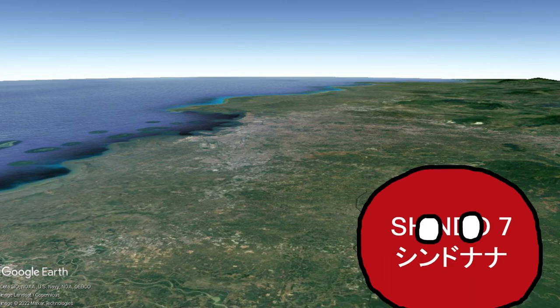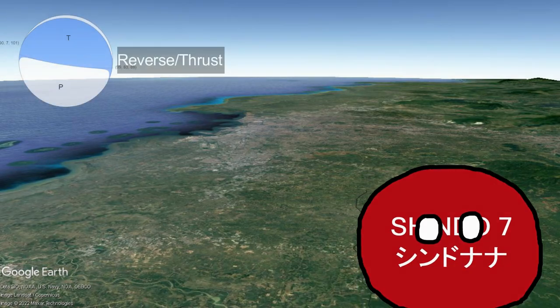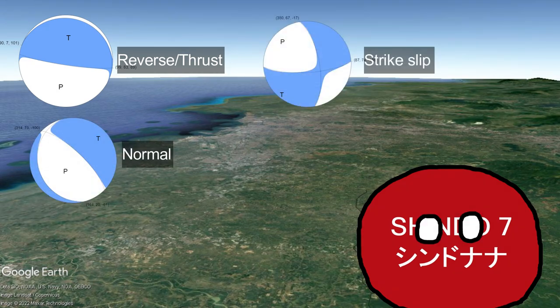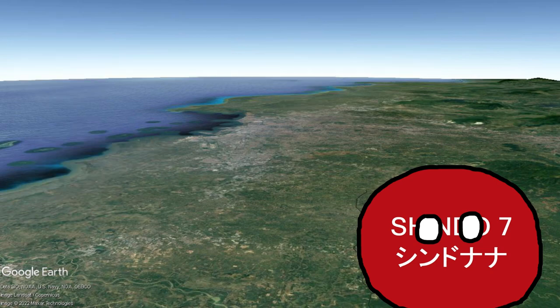So in a nutshell: if the colored part is in the middle, it's reverse or thrust faulting. If the blank part is in the middle, it's normal faulting. If there are quadrants, it's a strike-slip fault. Think of it like this — the blue part is the part moving away from the center of the ball, also known as getting uplifted.